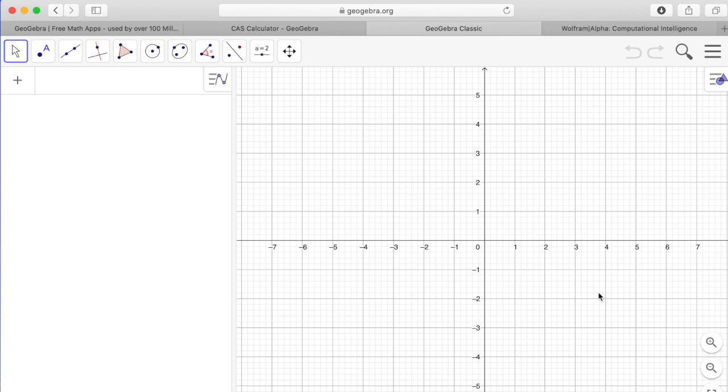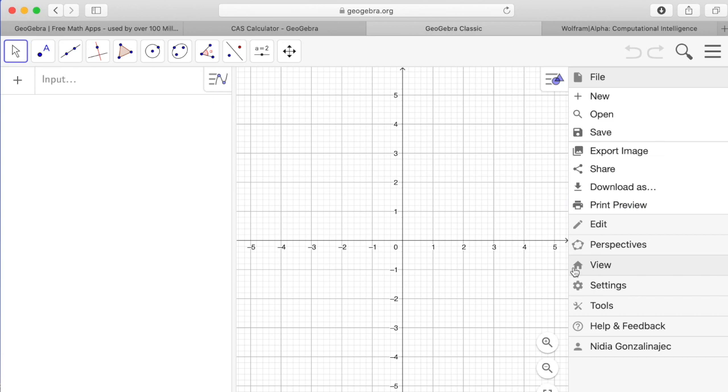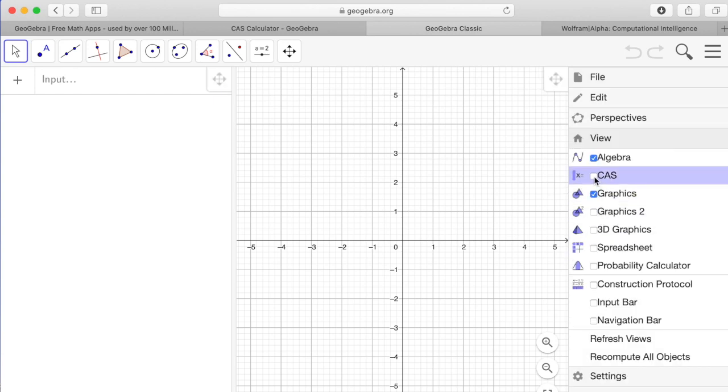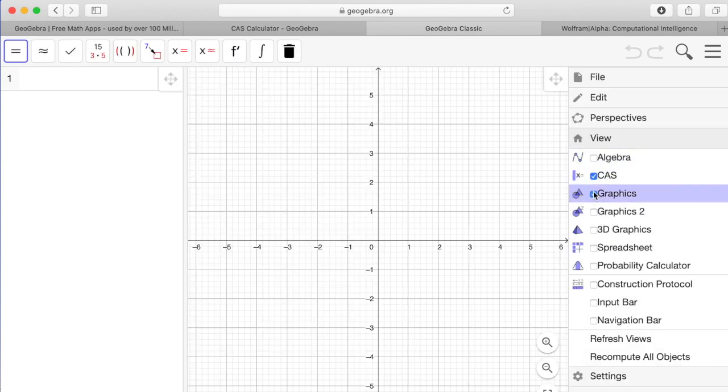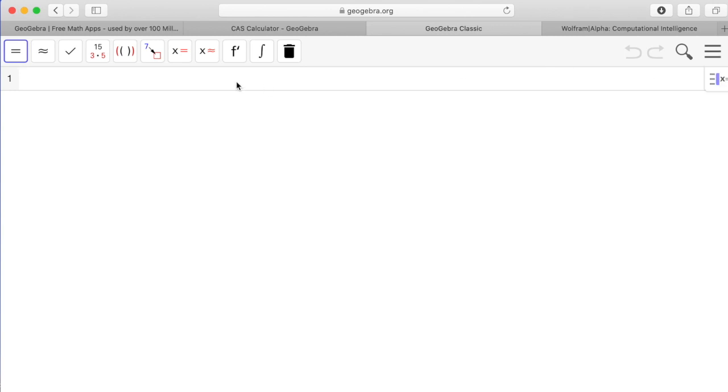When you open up GeoGebra Classic, often you'll have a menu that pops up with options. If it doesn't, click on these triple bars and go here to view and check CAS, and then you can get rid of algebra and graphics. We don't need either of those. And then I can just type in x times x squared minus 7 to the ninth power.